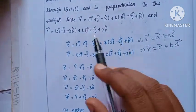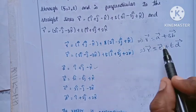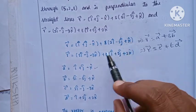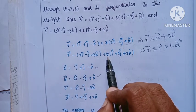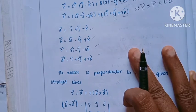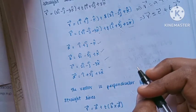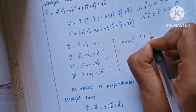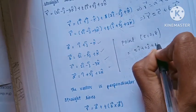Here we have the two straight lines. First, we identify the a-vector: the direction vector of the first line is i plus j minus k. The given point is (5, 2, 8), so the position vector a-vector is 5i plus 2j plus 8k.